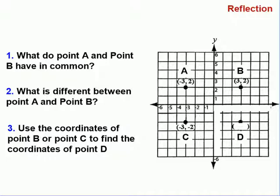Number one: what do point A and point B have in common? Here's point A and here's point B. If we look at the x-coordinate for A, it's negative three, and the x-coordinate for B is positive three. So those aren't the same — they don't have those in common. However, if we look at the y-coordinates, we see two for A and two for B. Both of those are the same, so they have the same y-coordinate.